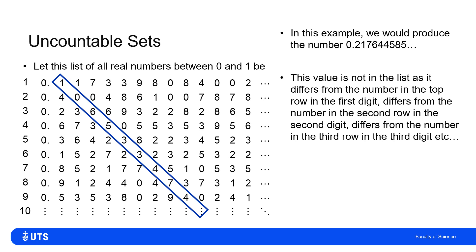Because if I look at the top row, it's wrong in the first decimal place — it's one larger, it's a two instead of a one. If I look at the second row, it's wrong in the second decimal place — it's a one instead of a zero. If I look at the third row, it's wrong in the third decimal place — it's a seven instead of a six. So on every single row, I can say my number is not that row because it's one larger on that diagonal.